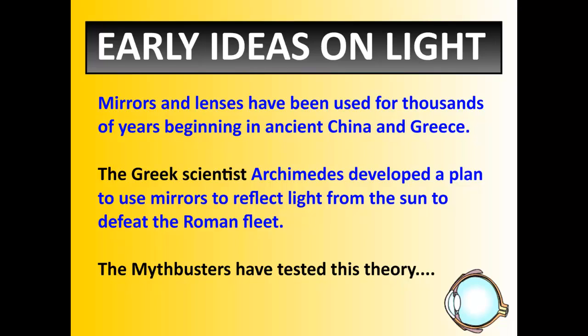One specific Greek scientist who we've mentioned before, Archimedes, had a plan that would use mirrors to reflect light from the sun to defeat the Roman fleet. He would set up a whole bunch of mirrors, use the sun to reflect light, and point them down at the ships to try and ignite them. The Mythbusters tested this theory — sadly, it did not work as well as Archimedes' story suggested. But there are principles behind it that do work.